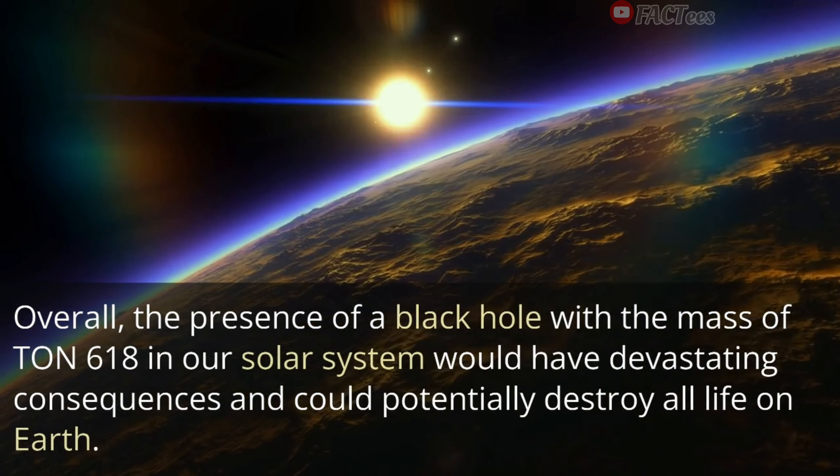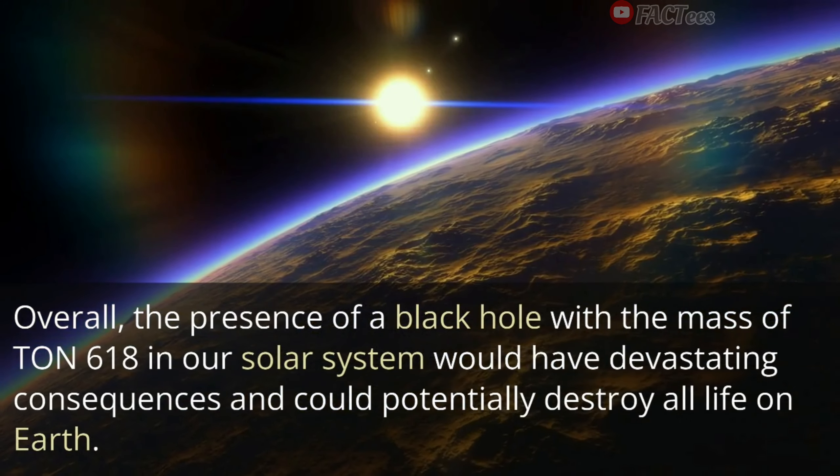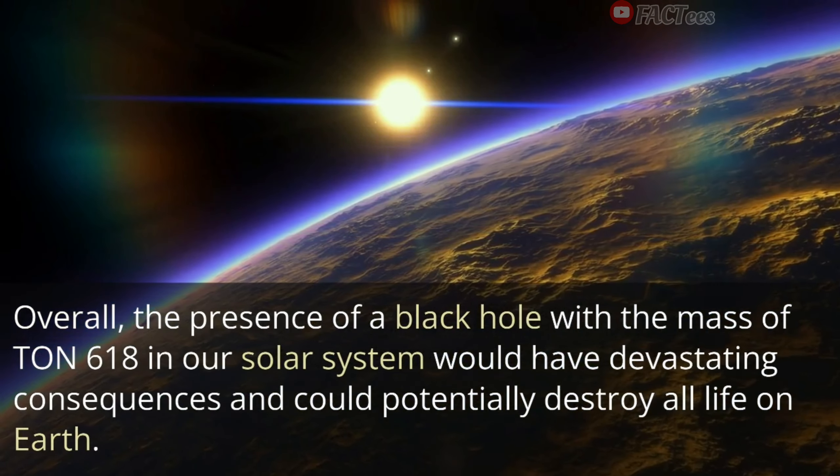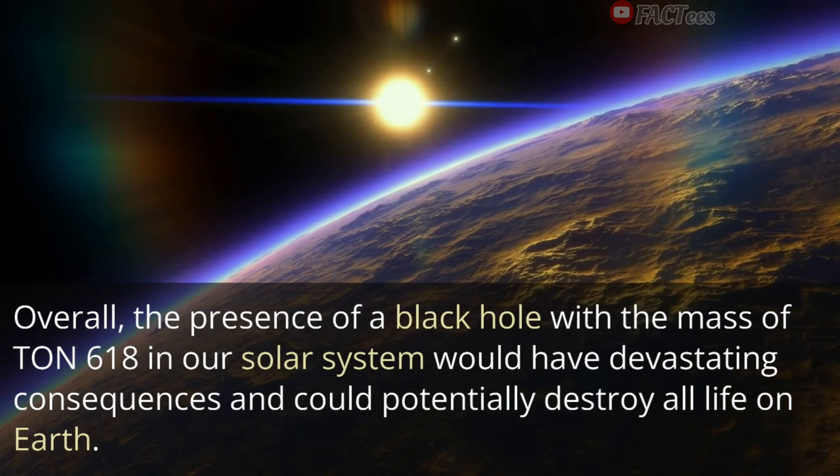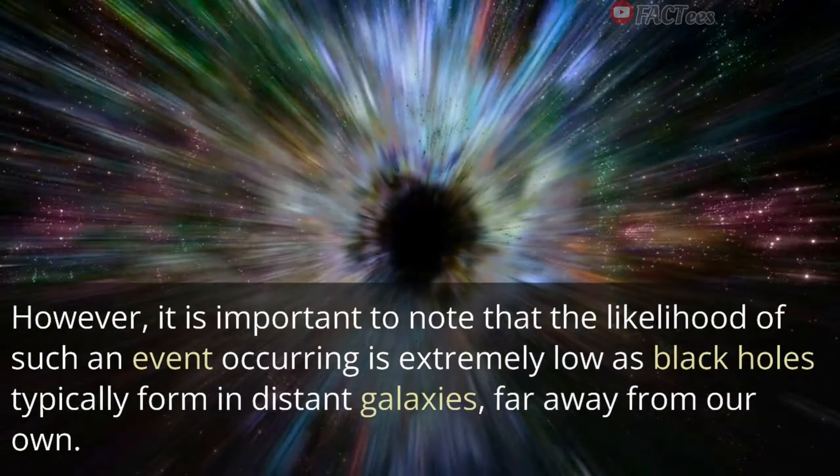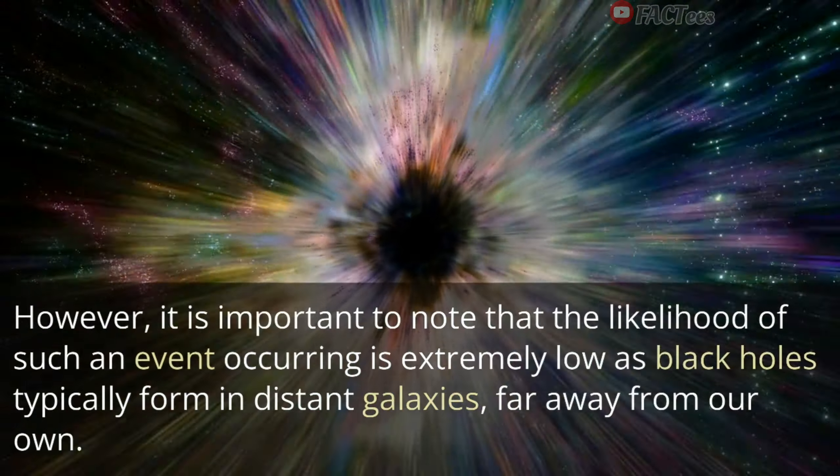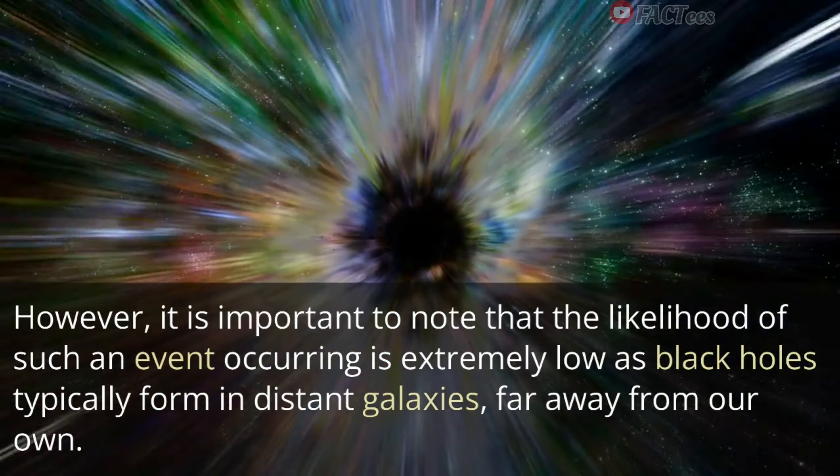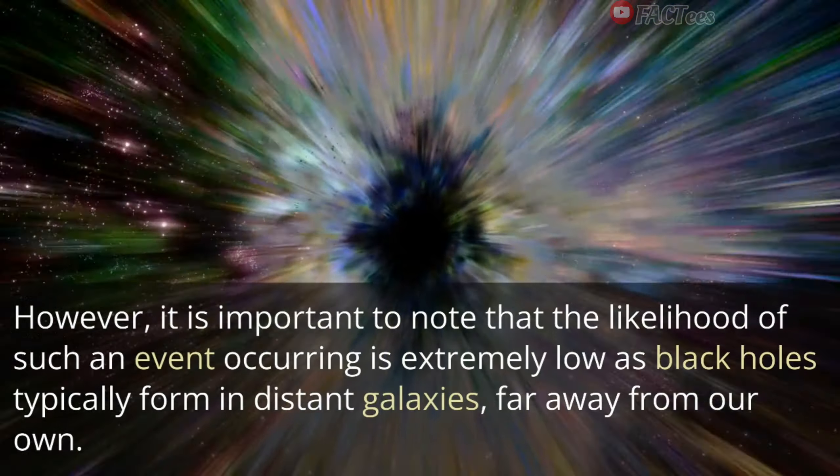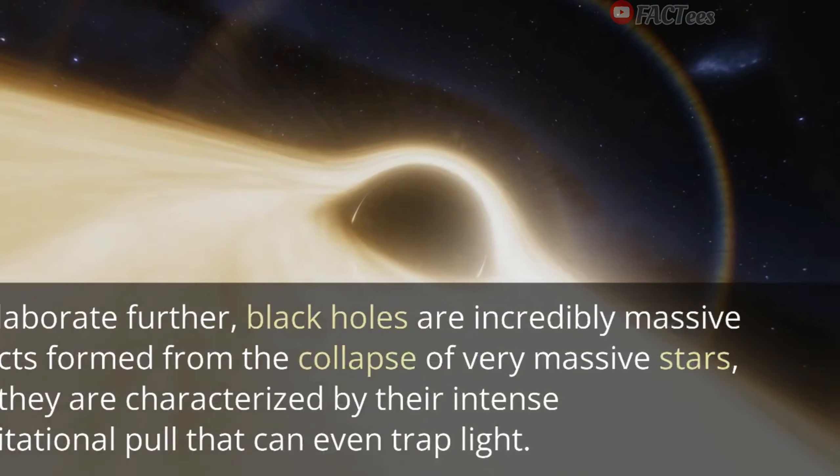Overall, the presence of a black hole with the mass of TON 618 in our solar system would have devastating consequences and could potentially destroy all life on Earth. However, it is important to note that the likelihood of such an event occurring is extremely low, as black holes typically form in distant galaxies, far away from our own.